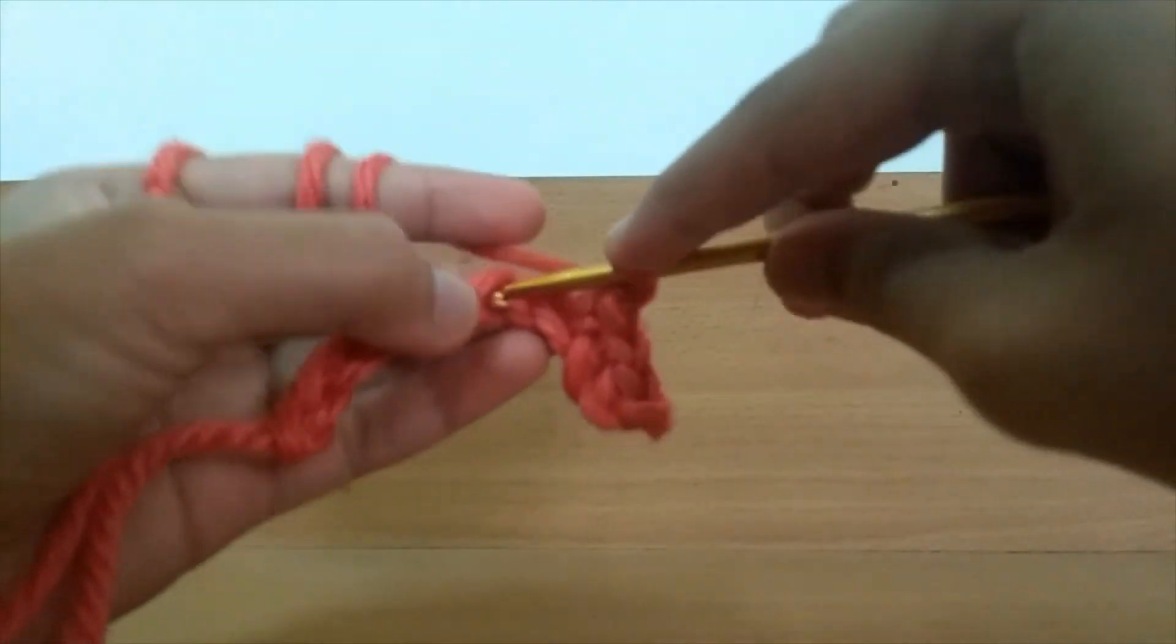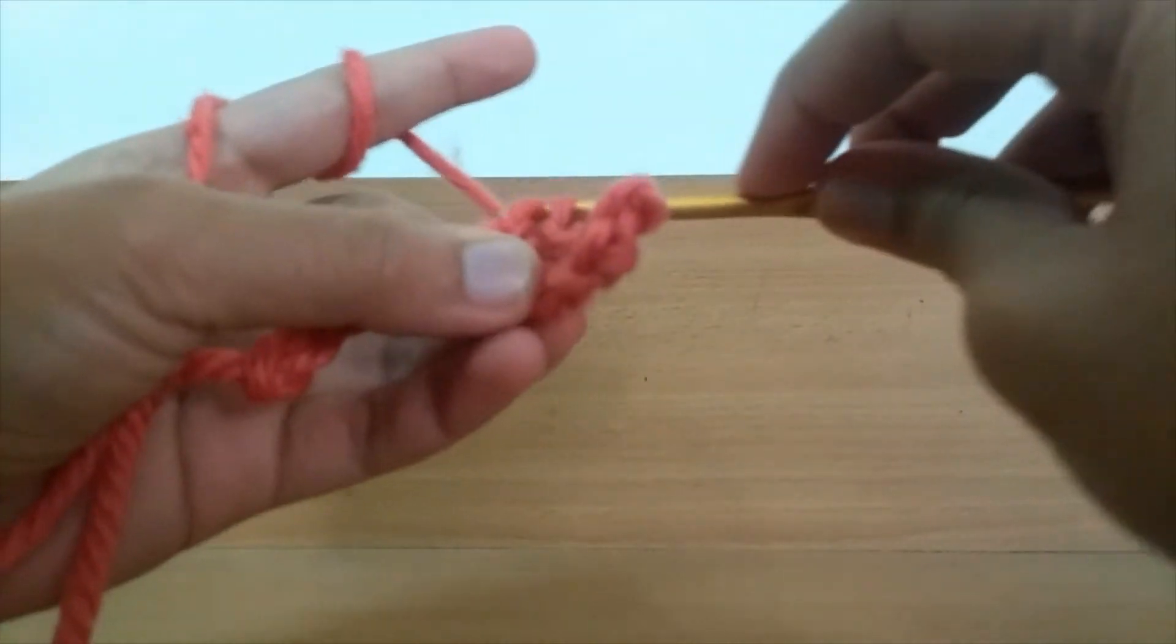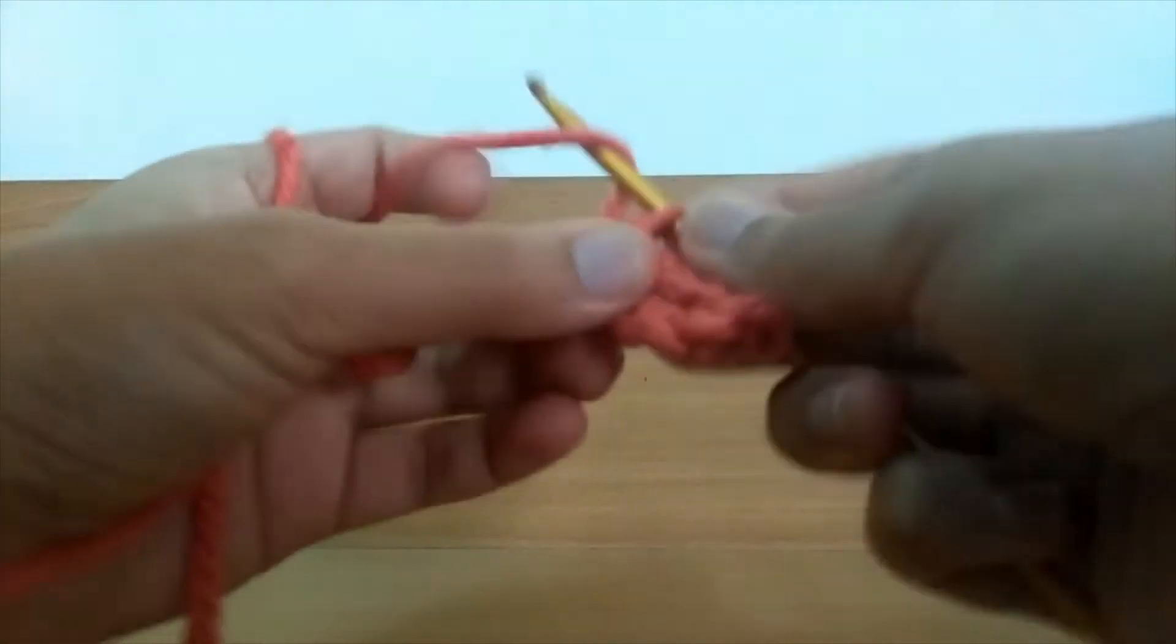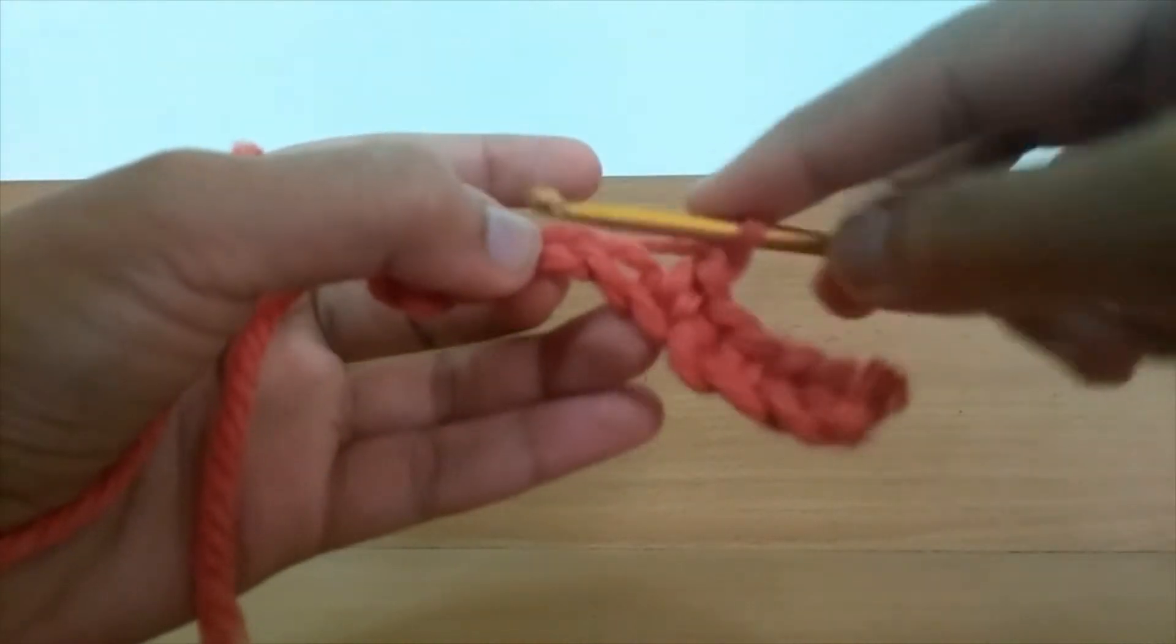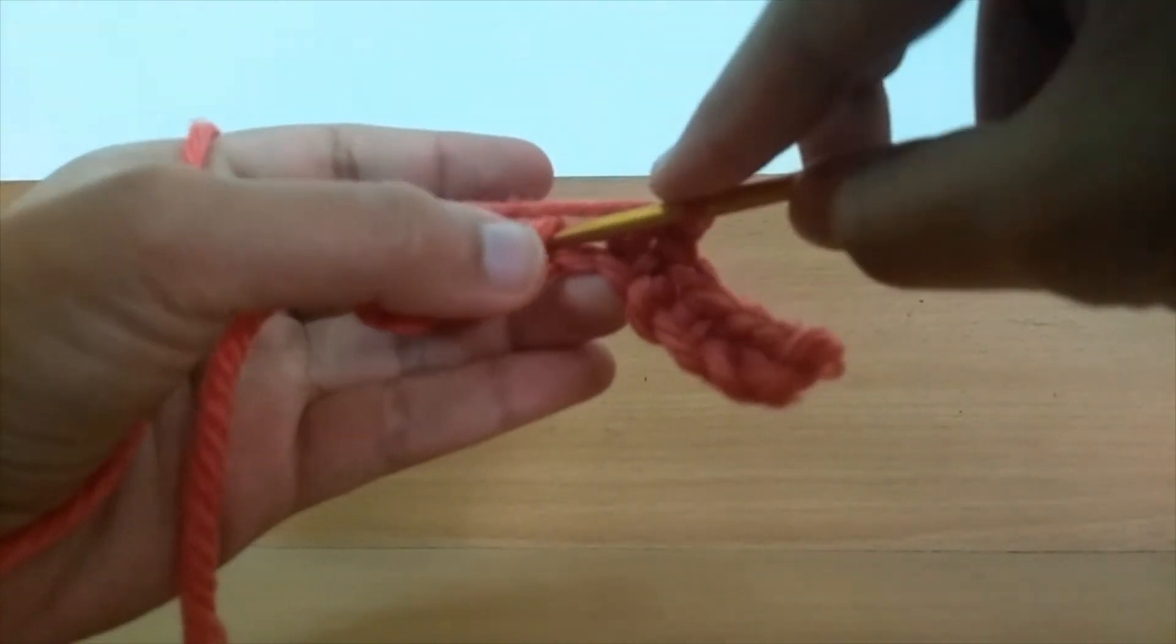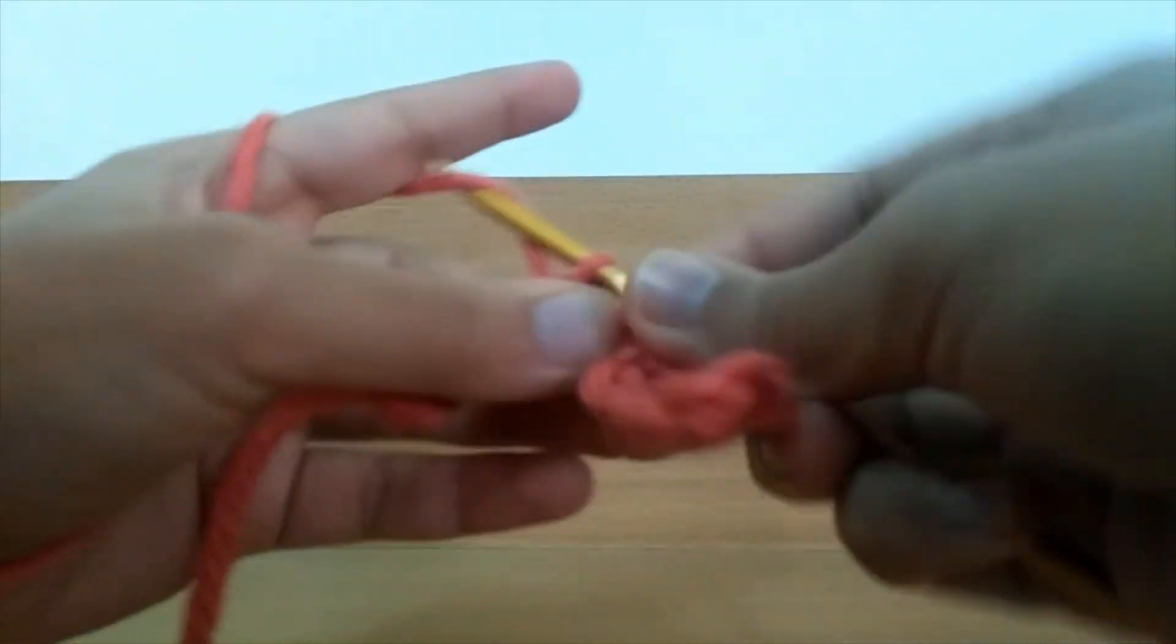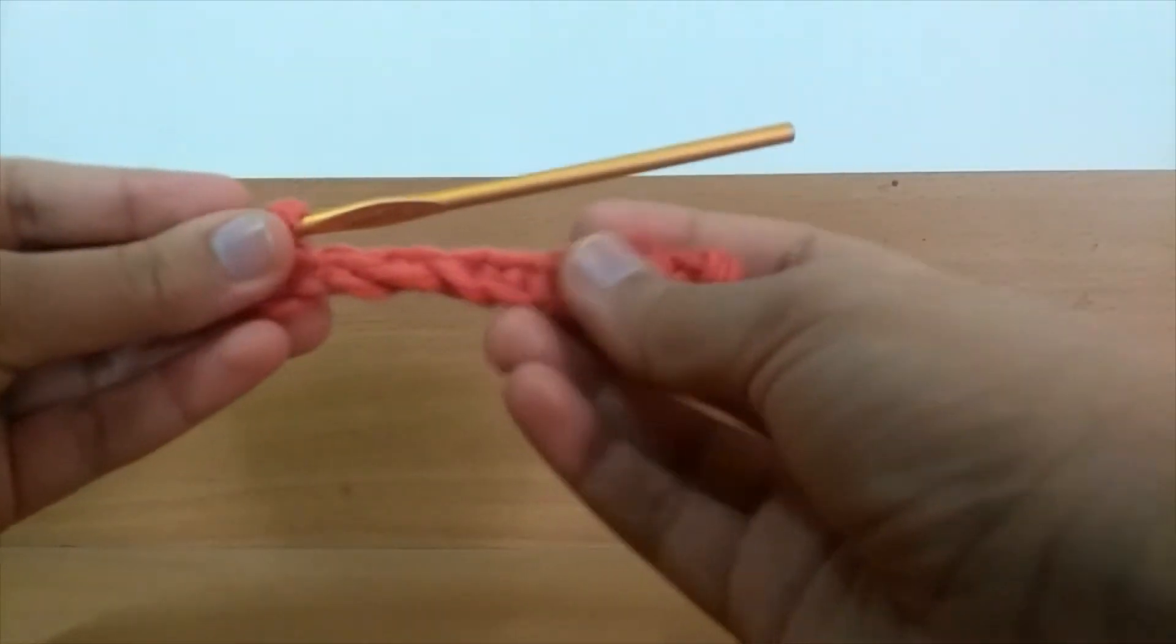Chain one, skip, single crochet. When you reach the end of your row, make sure that the last stitch you do is always a single crochet, even if the pattern otherwise says that you need to do a chain.